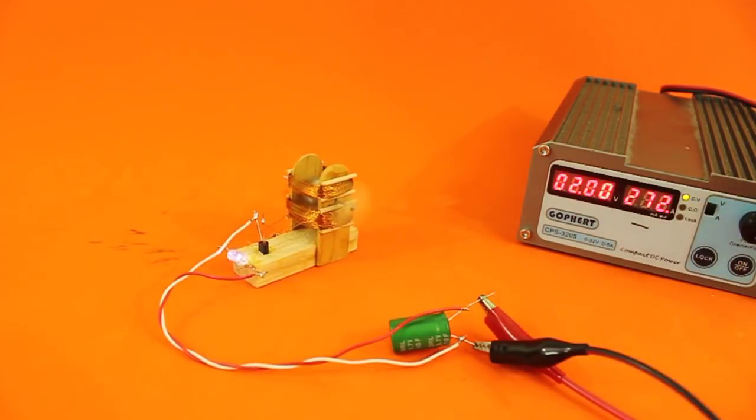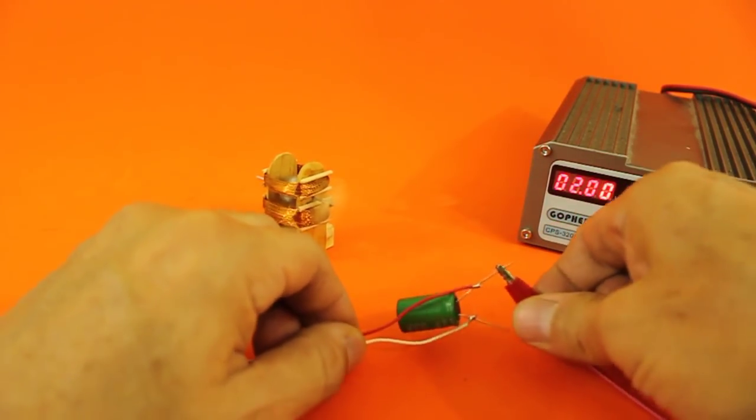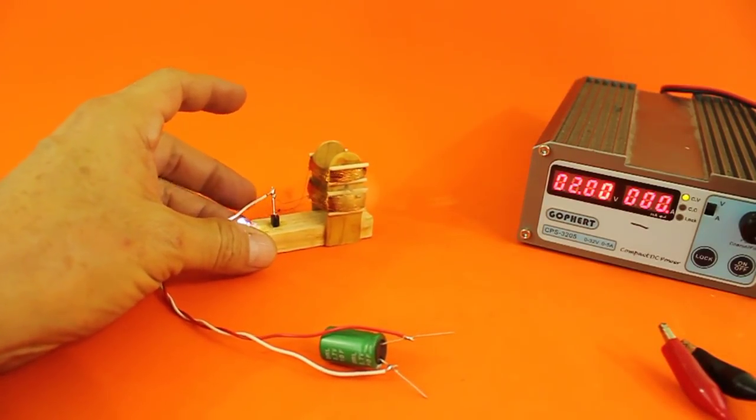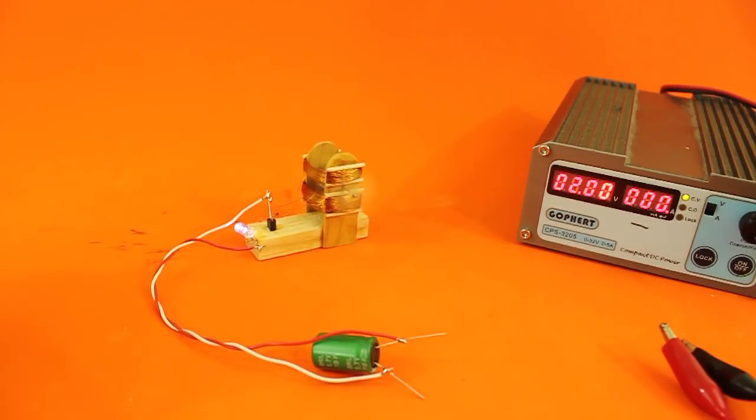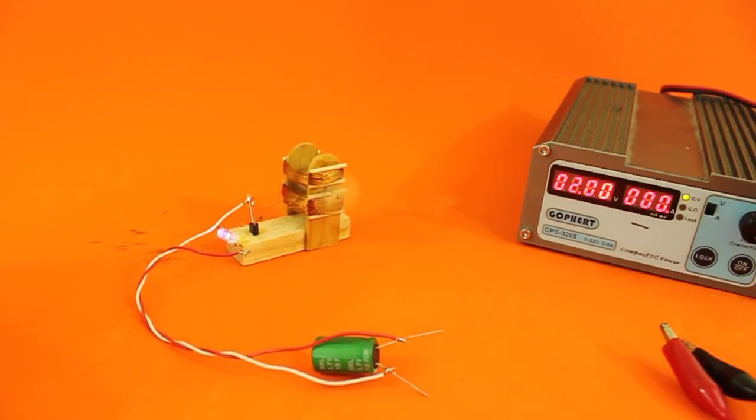Now we have 2V at the supercap and we can disconnect the power supply and the motor is running only from the supercap. And the charge is enough to make it run for several minutes.